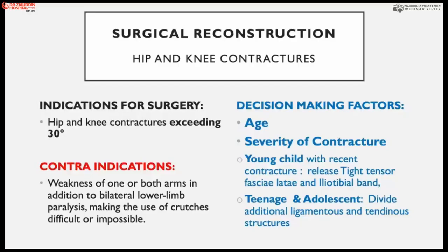Indications for surgery: if hip flexion contracture is over 30 degrees there is a problem; below 30 degrees patients can compensate with posture. When contracture is over 16 degrees there is an indication for surgery. Contraindication: if both arms are weak and the patient cannot use crutches, surgery should not make the patient more troublesome by making them wheelchair-bound rather than an ambulant patient. Decision factors include age over or under two years and severity of contracture.